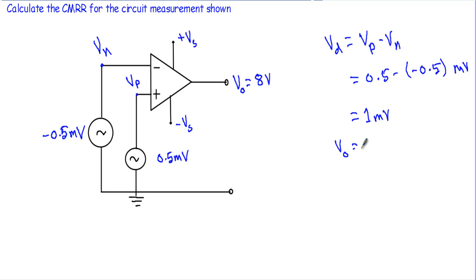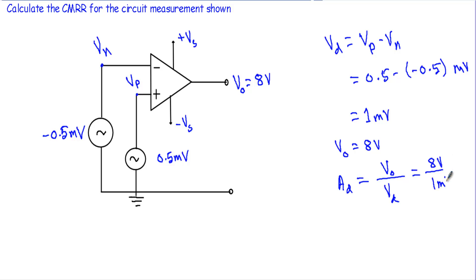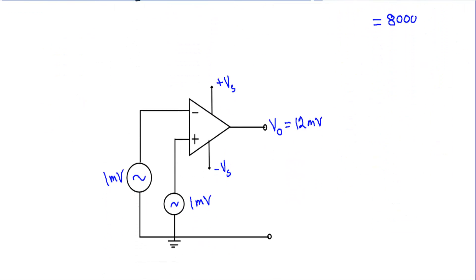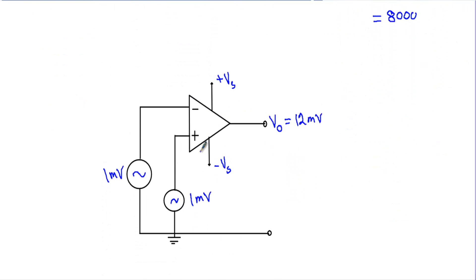Here our differential input voltage VD will be 1 millivolt. The output voltage VO equals only VO, from which I can calculate the differential gain AD equals output voltage divided by differential input voltage. The output voltage is 8 V and the input voltage is only 1 millivolt, therefore the differential gain AD will be equal to 8000.